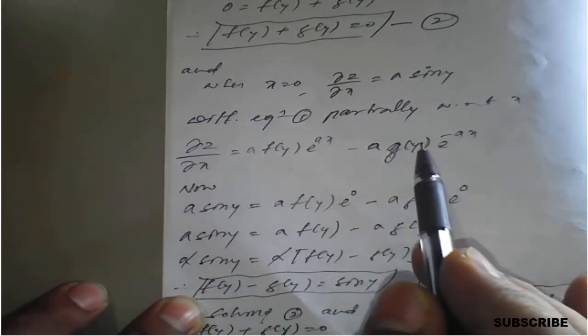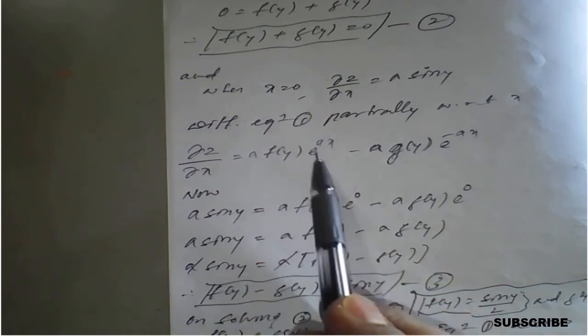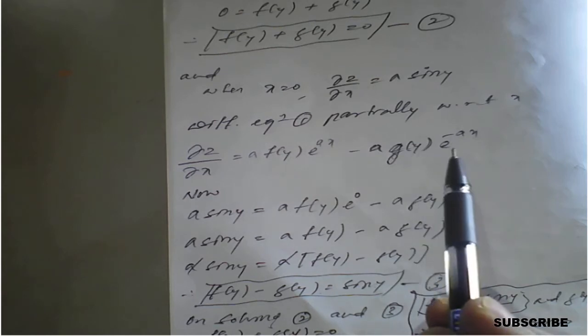Substitute x = 0 and ∂z/∂x = a·sin(y): a·sin(y) = a·f(y)·e⁰ − a·g(y)·e⁰. Cancelling a from both sides gives f(y) − g(y) = sin(y). Call this equation number three.